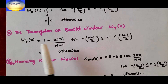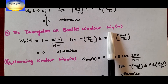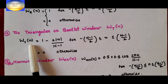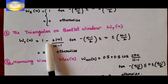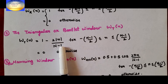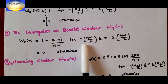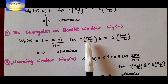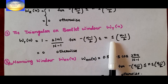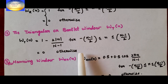The next definition is the triangular or the Bartlett window, designated by W_T(n). Its definition is: W_T(n) = 1 - 2|n|/(N-1), for -(N-1)/2 ≤ n ≤ (N-1)/2, and 0 otherwise.